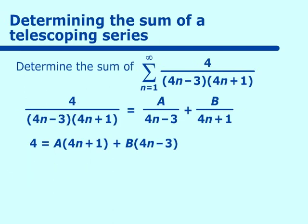Substituting in 3/4 for n, we get 4. The B will cancel out, and we'll get 4 equals A(4 times 3/4 + 1). That will cancel out, and we'll get 4A equals 4, or A equals 1.